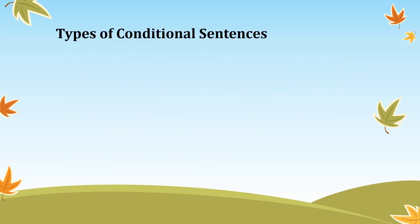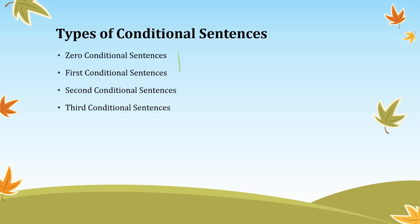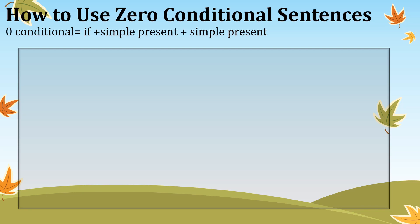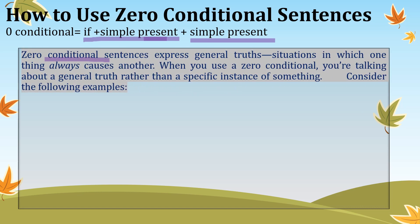Types of conditional sentences: Zero Conditional, First Conditional, Second Conditional, and Third Conditional. The structure of zero conditional sentences uses simple present tense in both the if-clause and the other clause.